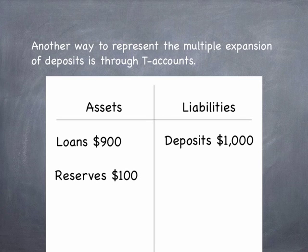Another way to represent the multiple expansion of deposits is through T-accounts. A T-account is an accounting relationship that looks at changes in balance sheet items. Since balance sheets must balance, so too must T-accounts. Liabilities include demand deposits — what people put into the bank — and assets include required reserves and money that can be lent out.